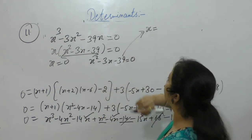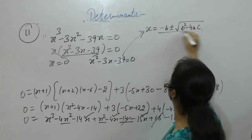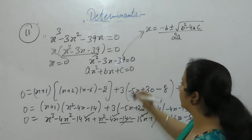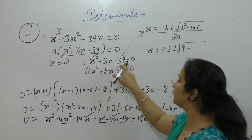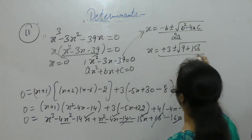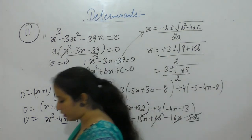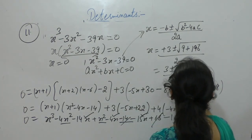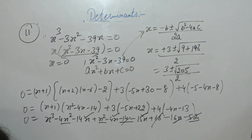So either x = 0 or x² - 3x - 39 = 0. Solve by quadratic formula: x = (-b ± √(b²-4ac)) / 2a. With a=1, b=-3, c=-39: b² = 9, 4ac = 4×1×39 = 156. So x = (3 ± √165) / 2. This is the value of x.